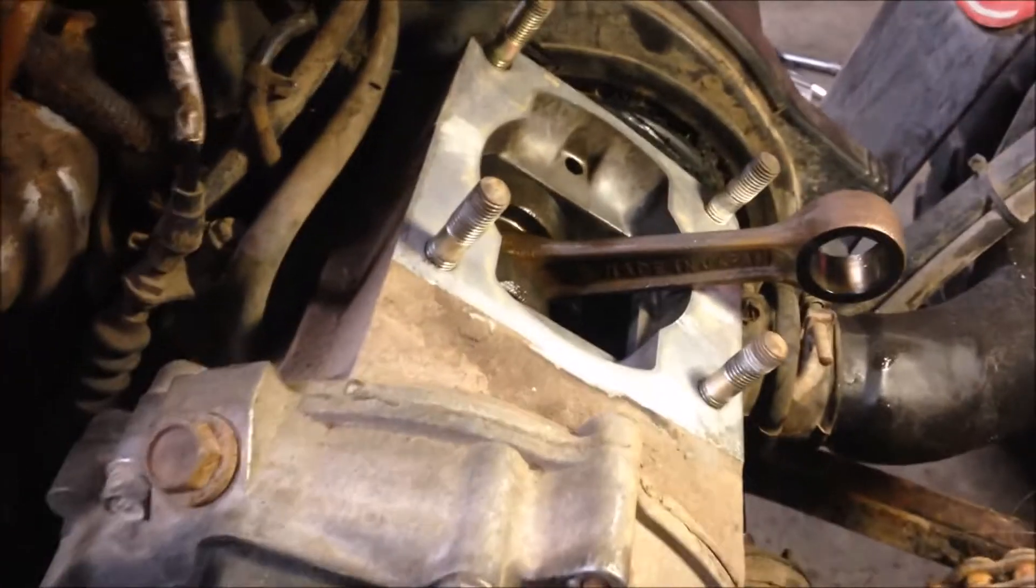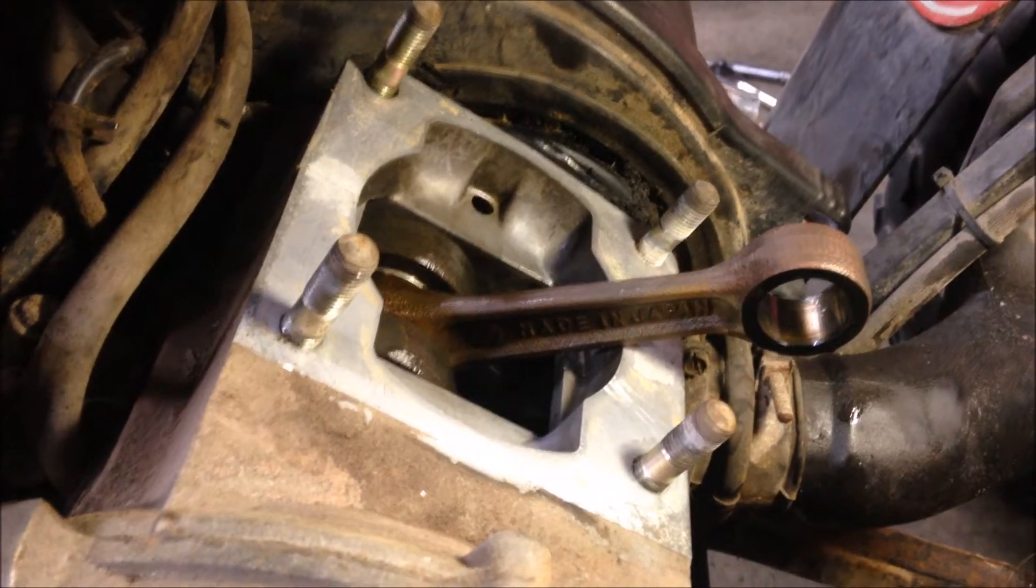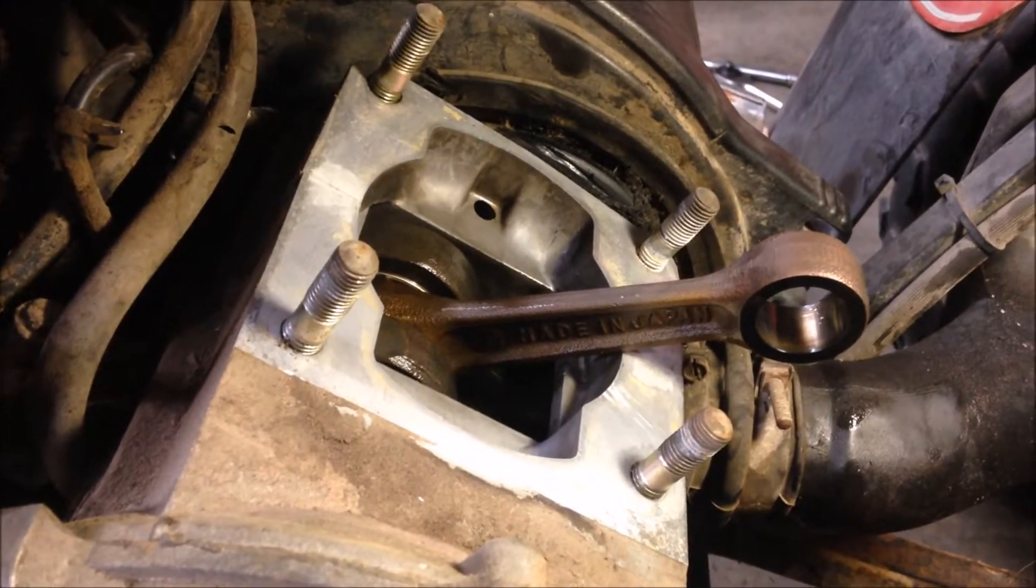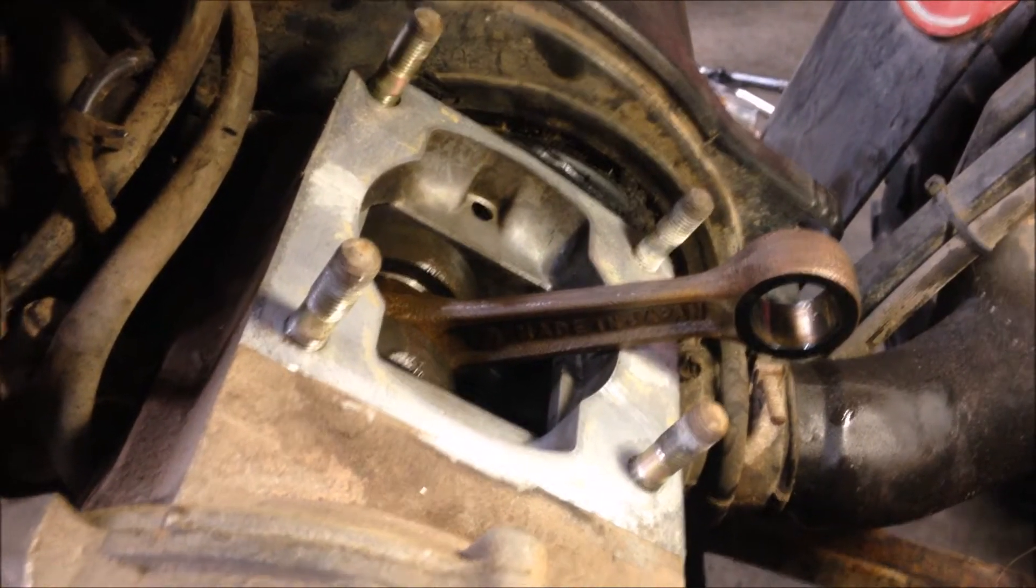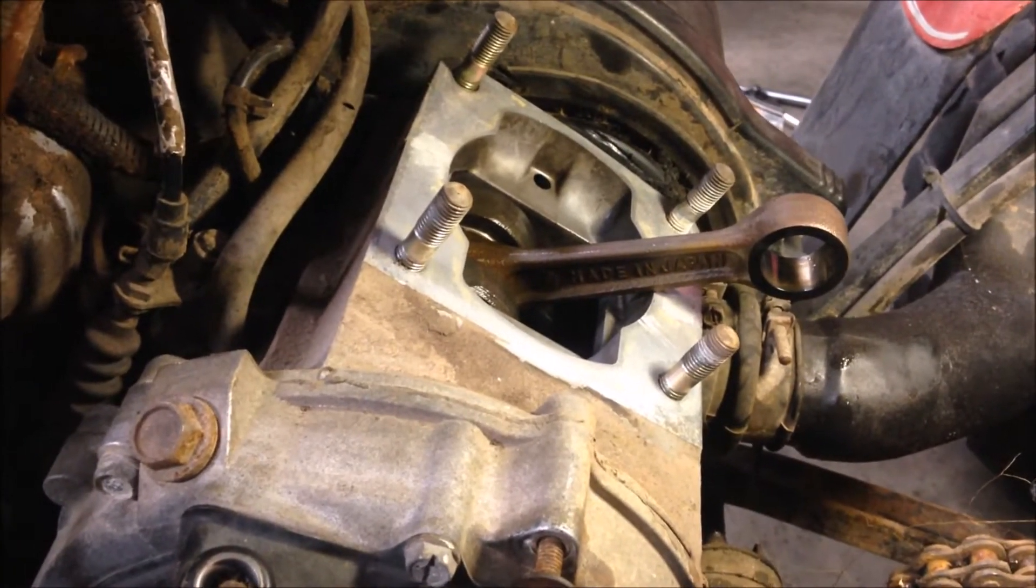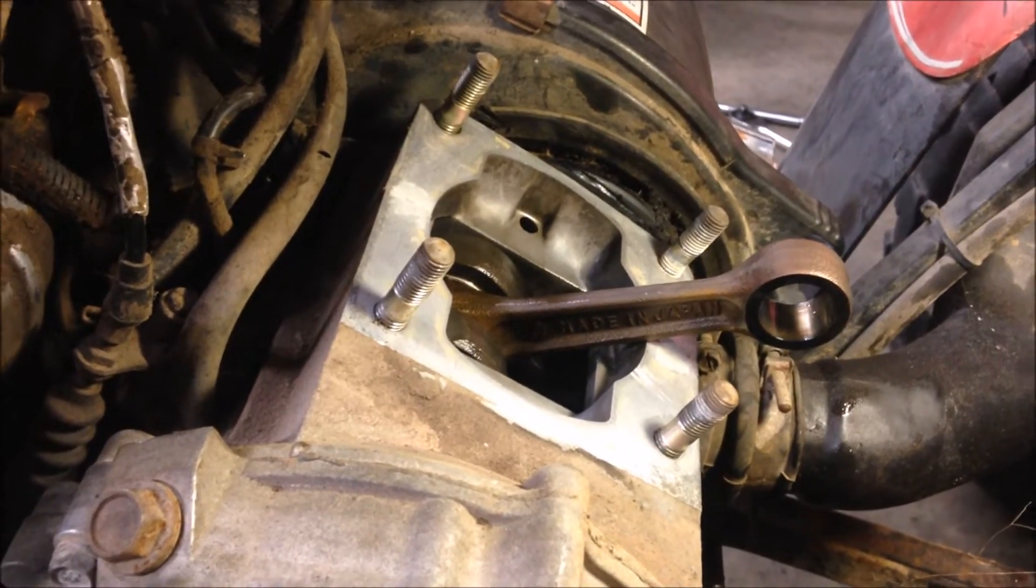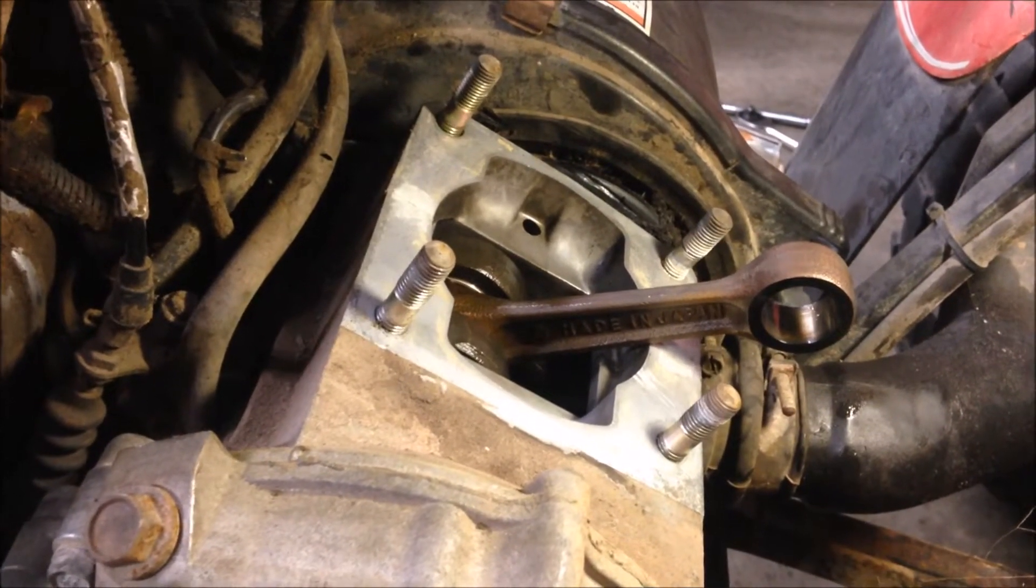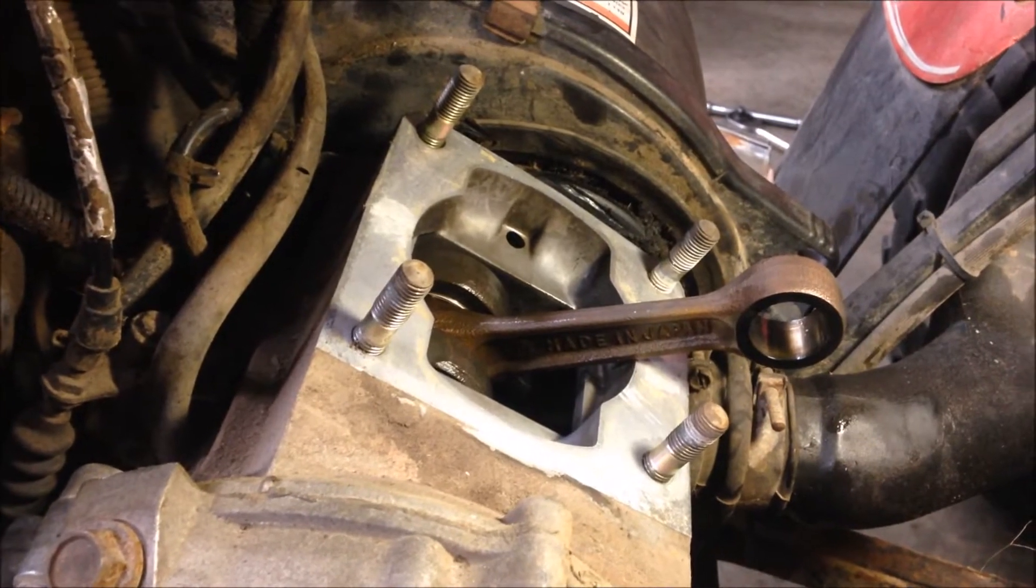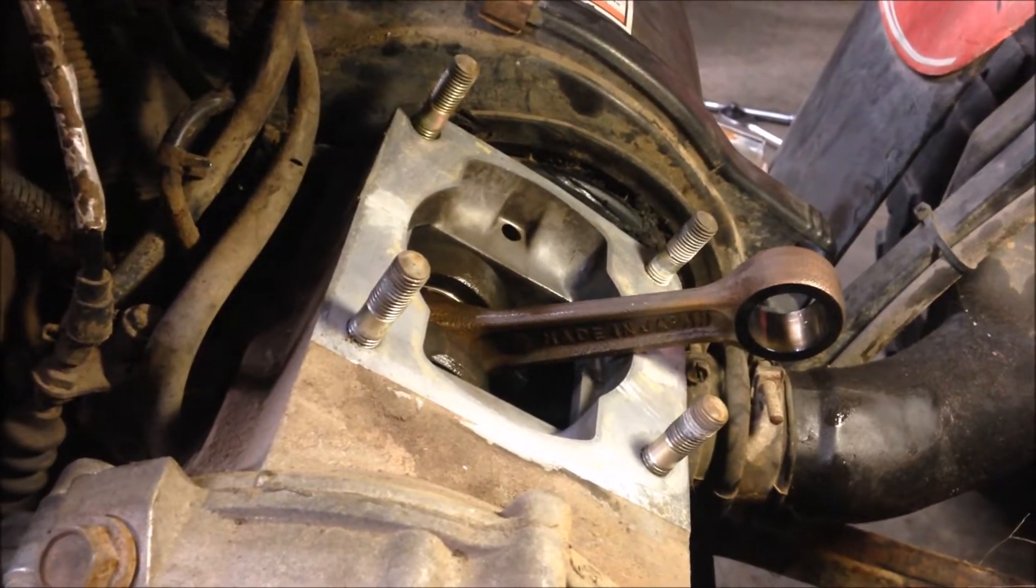Today I'll be working on the top end for a Polaris Trail Boss 250 4x4 year 1991. The previous owner ran it without oil, scoring the cylinder and melting the piston. The bottom end is good, so we'll just replace the cylinder, put a new piston on it, torque everything to spec, and the engine will be together.